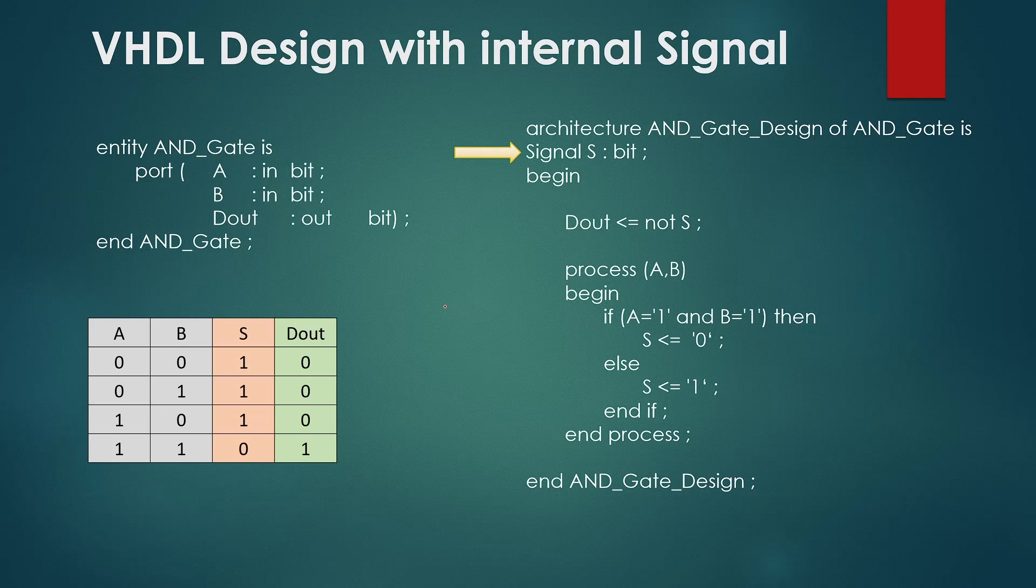Now based on the functional description which we have written here inside the architecture for the AND gate, think about the possible inputs A and B. What would be the value of internal signal S and then what we will get at the output D out. So the truth table for our design will be like this.